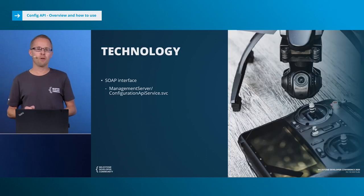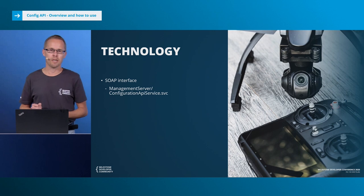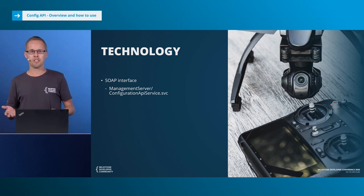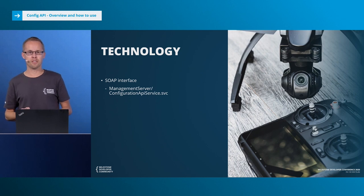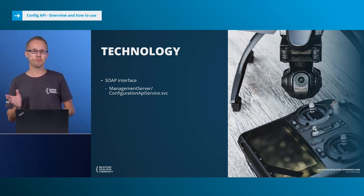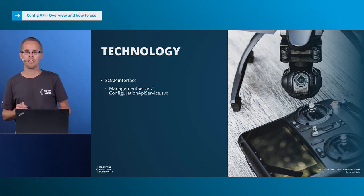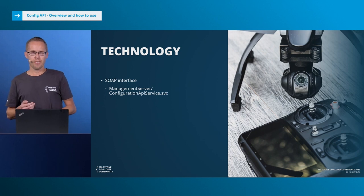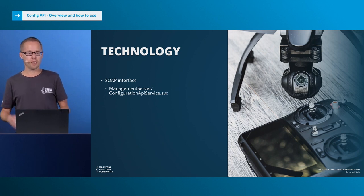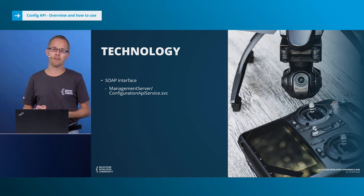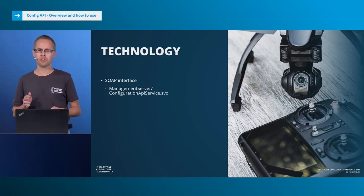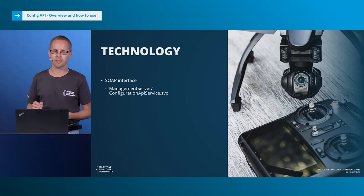So let's go a bit more into the technology part. What is the configuration API? Basically it's just a web service or a SOAP interface. You'll find it on any management server under the management server slash configuration API service dot SVC UI. It's a fairly simple SOAP interface with only about 25 methods, but in normal use you'll just use about five of these. I'll get back to that on a later slide.